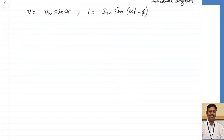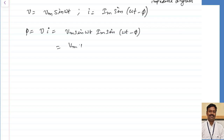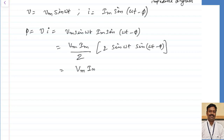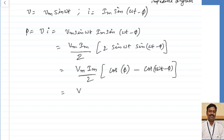Let us calculate the power. The instantaneous power p equals instantaneous voltage multiplied by instantaneous current. This can be written as Vmax·sin(ωt) × Imax·sin(ωt − φ). Multiplying and dividing by 2, and using the identity 2·sinA·sinB = cos(A−B) − cos(A+B), this becomes [Vmax·Imax/2]·cos(φ) − [Vmax·Imax/2]·cos(2ωt − φ).